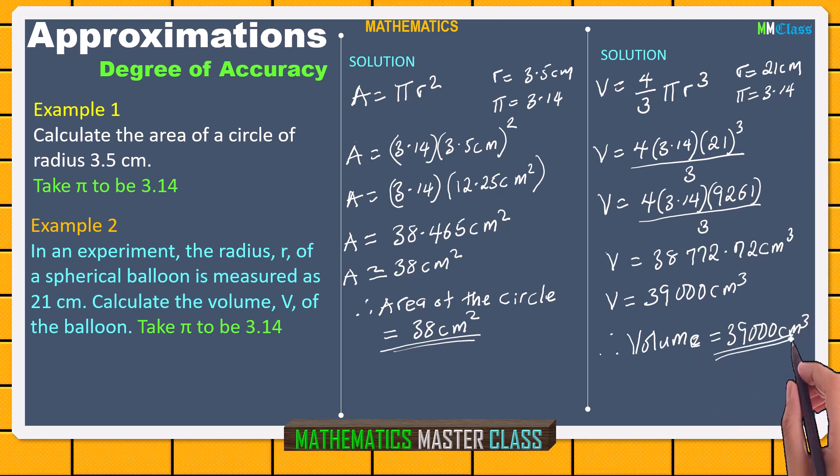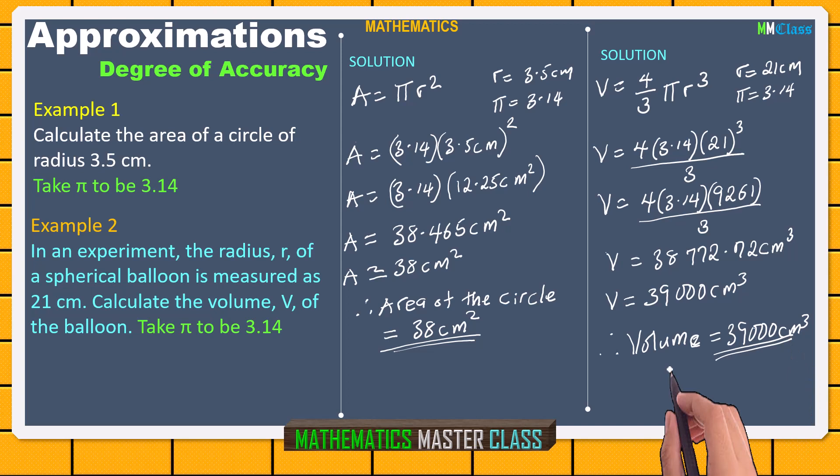Remember, the degree of accuracy is all about the final answer. If the parameter given in the question is in two significant figures, your final answer must be in two significant figures. If it is in one significant figure, your answer must be in one significant figure. If it is in four significant figures, your answer must be in four significant figures. That is what degree of accuracy is all about. Thank you and God bless you.